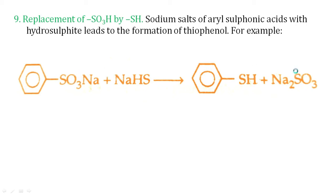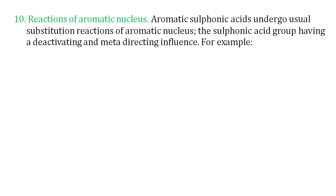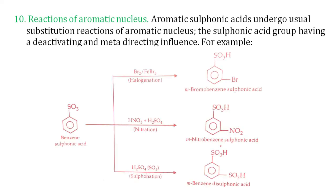The last reaction is the reaction with the aromatic nucleus, which is a nucleophilic substitution reaction. The sulfonic group is a meta-directing group. So in halogenation, the bromine goes to the meta position; in nitration, the nitro group also goes to the meta position; and in further sulfonation, substitution also occurs at the meta position. That covers all the chemical properties of sulfonic acids.